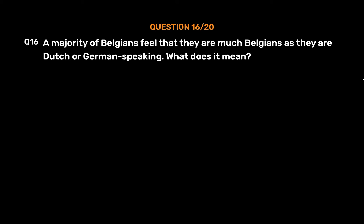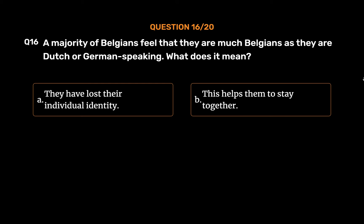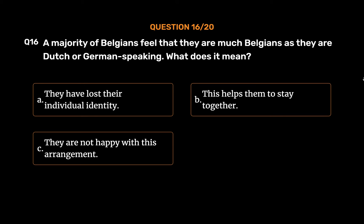Question number 16. A majority of Belgians feel that they are as much Belgian as they are Dutch or German speaking. What does it mean? Option A: They have lost their individual identity. Option B: This helps them to stay together. Option C: They are not happy with this arrangement. Option D: None of them.